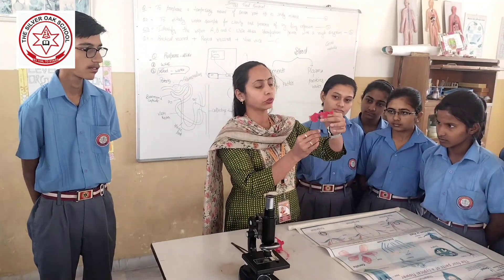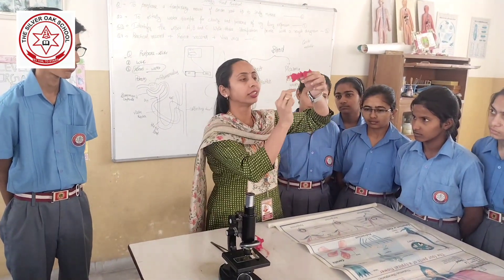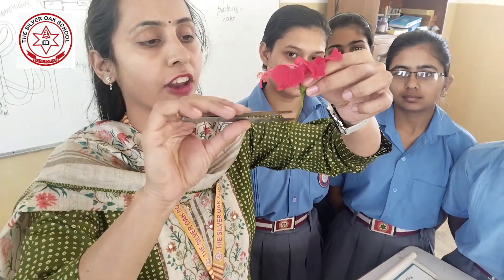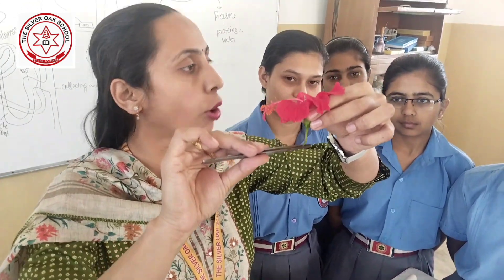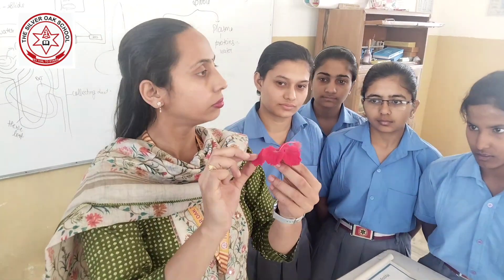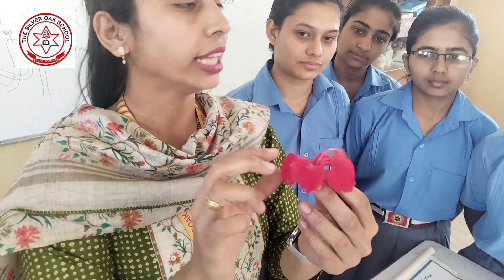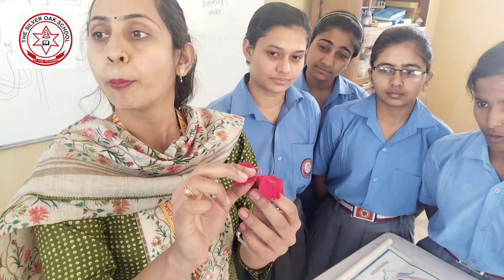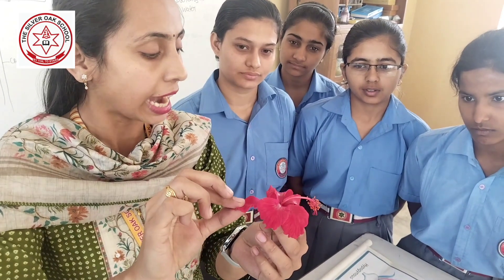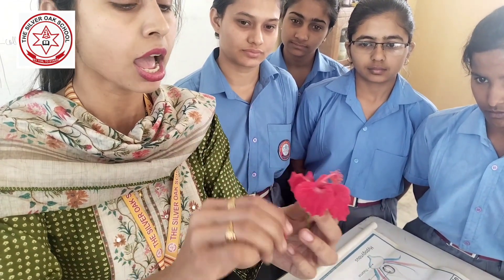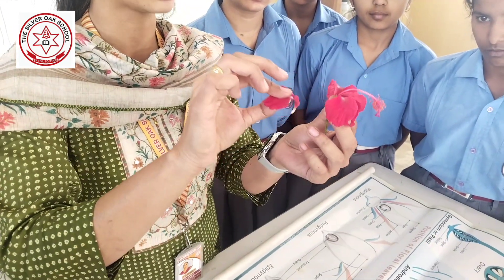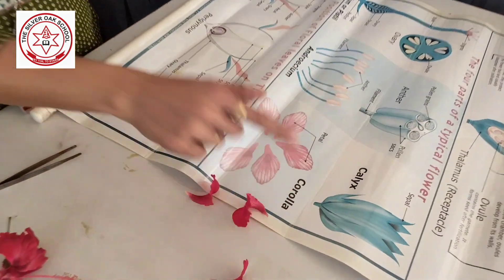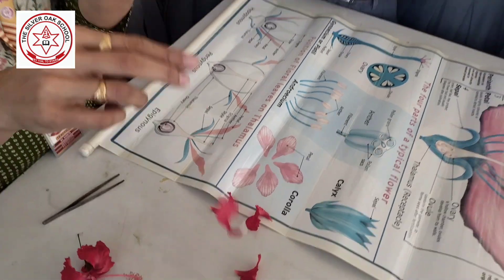These are the different parts of the flower. The first part is known as pedicel — the part from which the flower is attached to the plant body. Can you see these colored petals? They are colored to attract the pollinator for the pollination process. These are known as petals, and petals are also known as corolla.